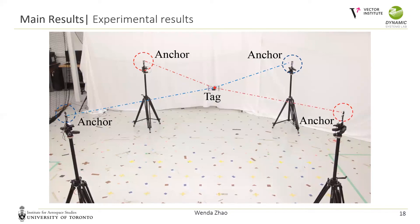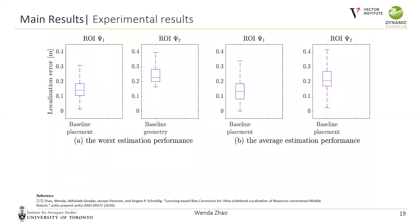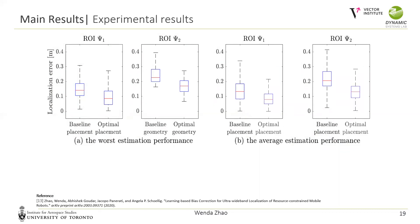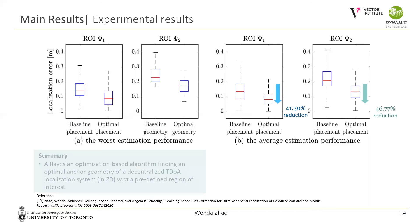The optimal geometry results with four anchors were validated in experiments. We fixed four anchors on tripods, collected UWB TDOA measurements at 20 sample points at the same height inside the region of interest, and applied a multi-lateration estimator for localization. The comparison of worst and average estimation performance between baseline and optimal geometry is summarized in box plots. With the optimal anchor geometry, the largest empirical localization variance in both regions is reduced, and the average localization variance is reduced by around 40%.